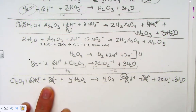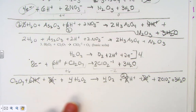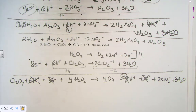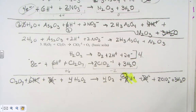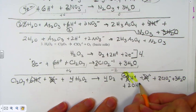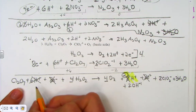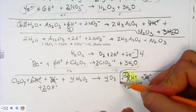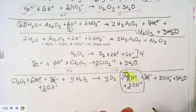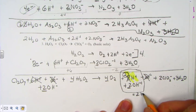Electrons always cancel, or we've made a mistake. If this were an acidic solution we'd be done, but it's basic — so there's one additional step. I look for the number of protons remaining. The very last thing I do is neutralize the protons by adding hydroxide ions to both sides to keep it balanced. Adding 2 hydroxides: 2 H⁺ and 2 OH⁻ combine to give 2 waters.